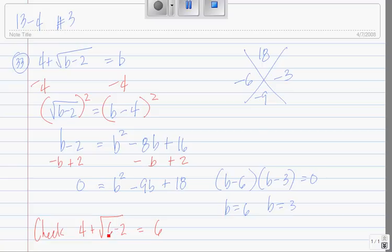No. 6 minus 2 is 4. That's 4. 4 minus 2 is 4, sorry. That means this is 4 plus 2 equals 6. This works.